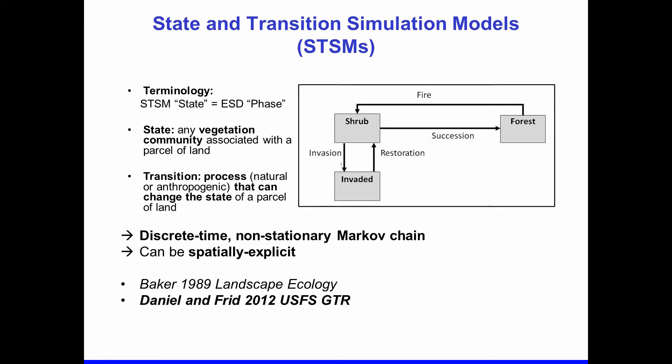These transitions can be either anthropogenic or natural processes. The technical term for state and transition simulation models is discrete, non-stationary Markov chain models. These models can either be non-spatial — simulating the amount of land in each vegetation state over time without producing a map — or they can be spatially explicit, beginning with a map and producing map-based predictions, as well as incorporating processes where individual parcels of land interact with their neighbors.